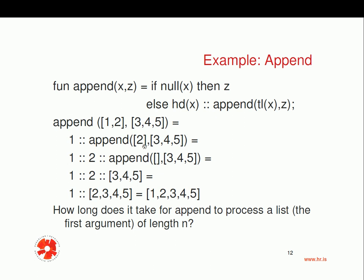Now let's trace the call `append([2], [3,4,5])`. Our x is `[2]`, which is not null, so we take the head, which is the element 2, and append that to the tail of x. But notice the tail is now empty — the tail of the list `[2]` is the empty list. The second argument is still `[3,4,5]`, unchanged. So we need to trace the call `append([], [3,4,5])`. Now x is null, so the base case is applicable — if null of x, we return z. So we return the list `[3,4,5]`.